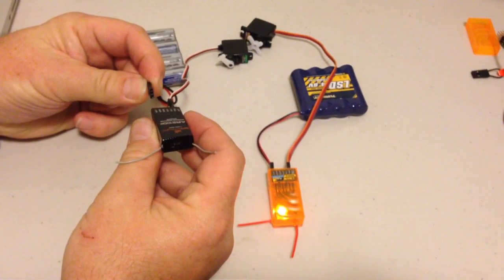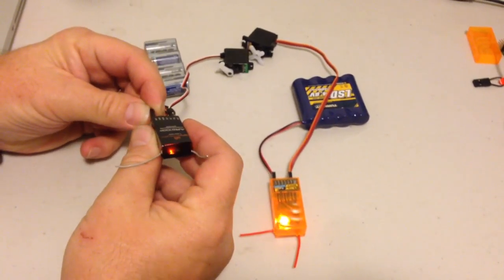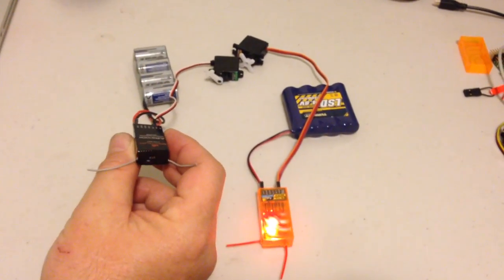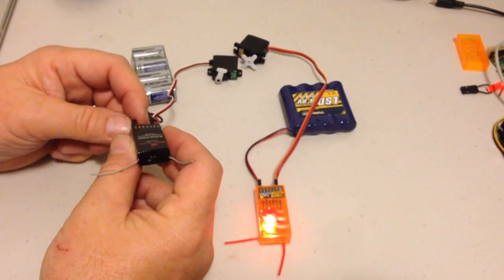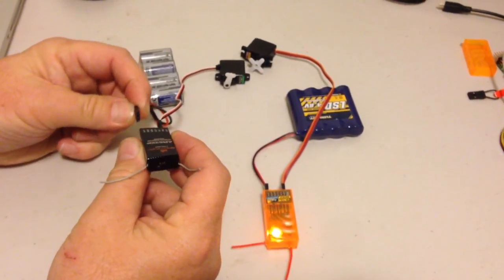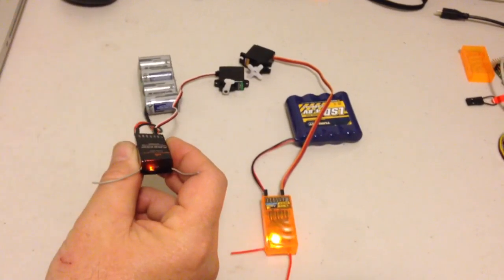I'll do that a number of times. Removing power, connecting power. You get instant connection back to the transmitter. So basically the brownout recovery is instant.